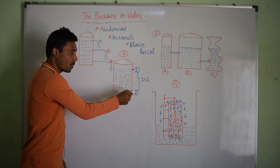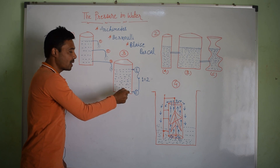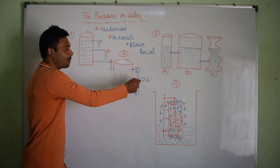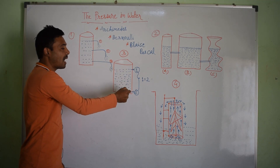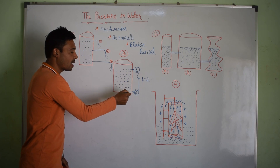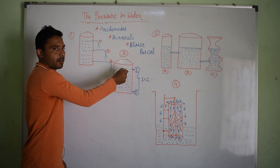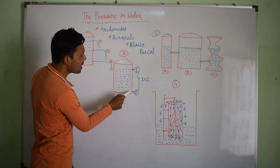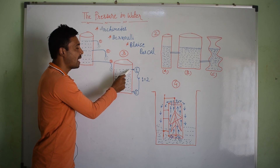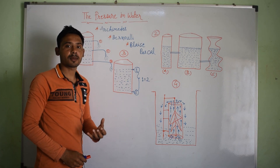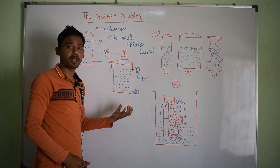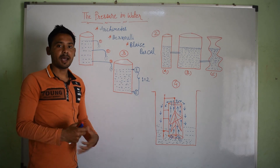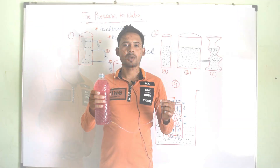I thought that since water pressure is highest at the bottom, if we give the water a means to flow out and put a pipeline to the top side, the water from the high-pressure area should move to the low-pressure area. I was trying to apply the law that says movement of liquid is from high pressure to low pressure. Now let us see — I have a demonstration for you.